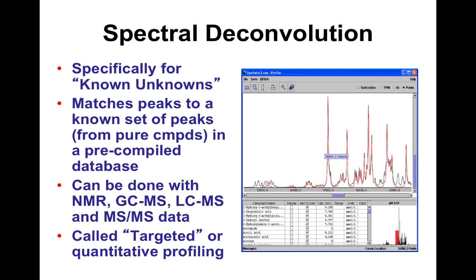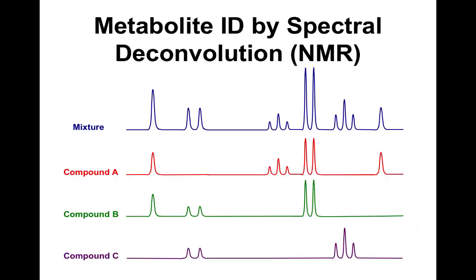This is an example of a spectrum that has been deconvolved. The black represents the actual spectrum and the red the deconvolution, where you've done your best to match. In NMR you have a mixture with about a dozen peaks — some tall, some short, with doublets, triplets, and singlets. This particular mixture contains three compounds, each with its own pure spectrum; adding all three together produces the mixture spectrum.